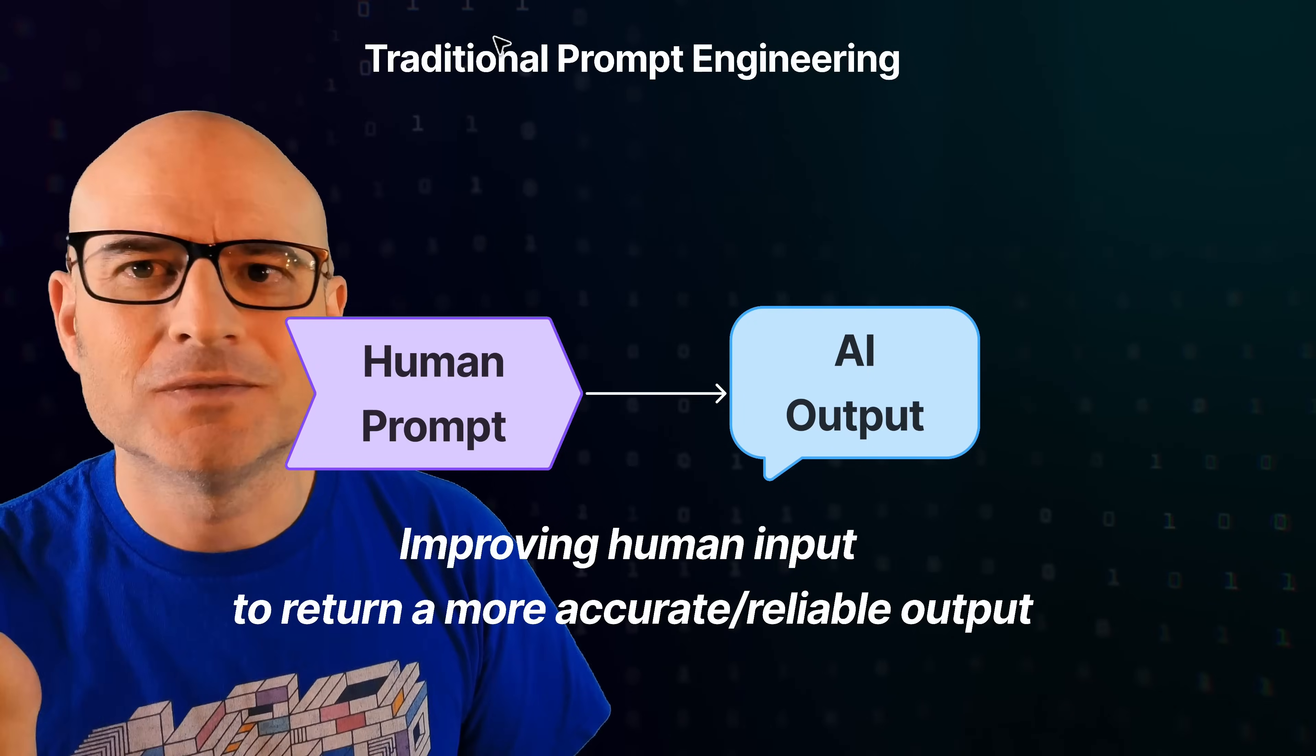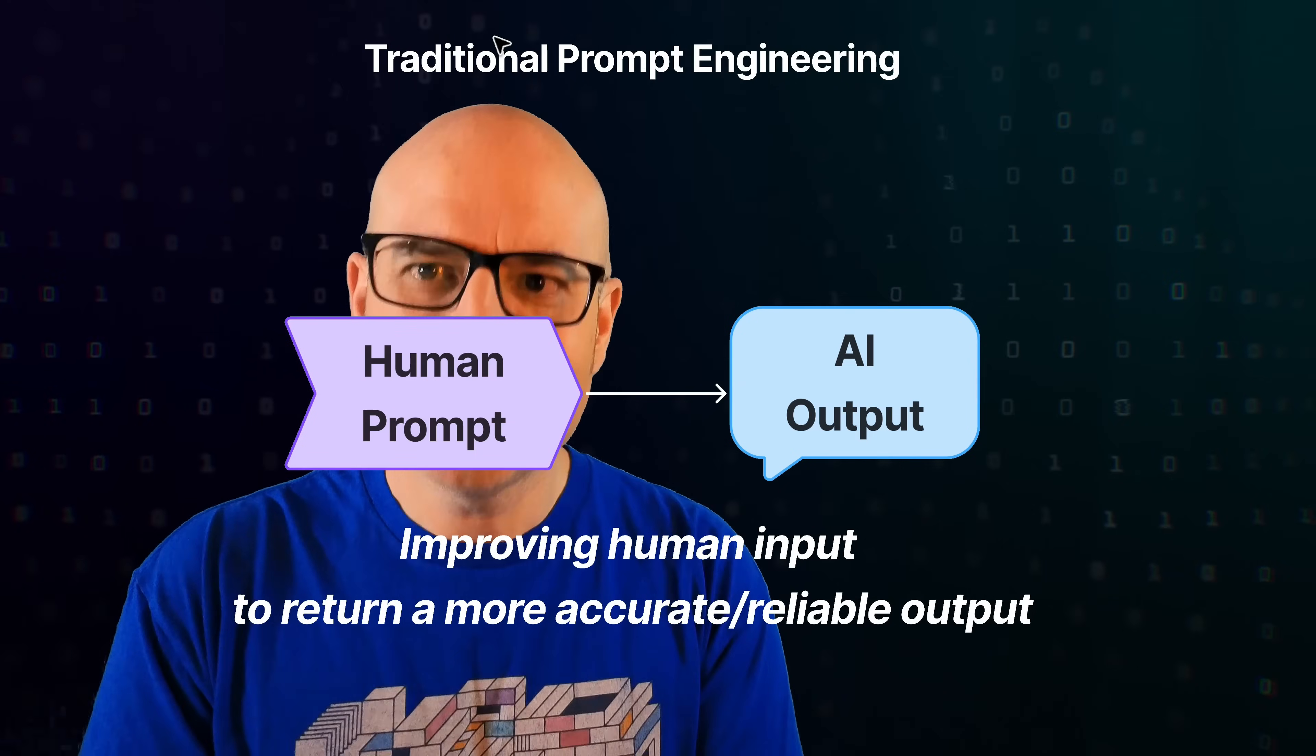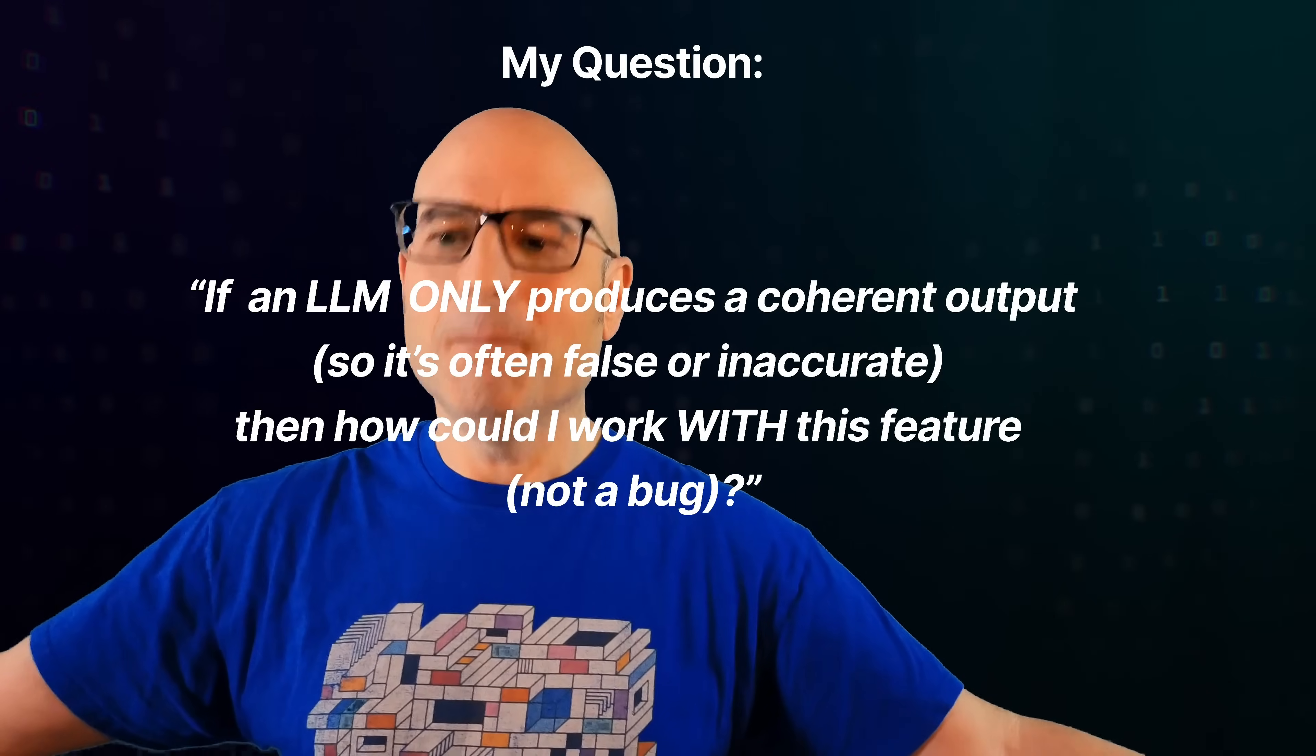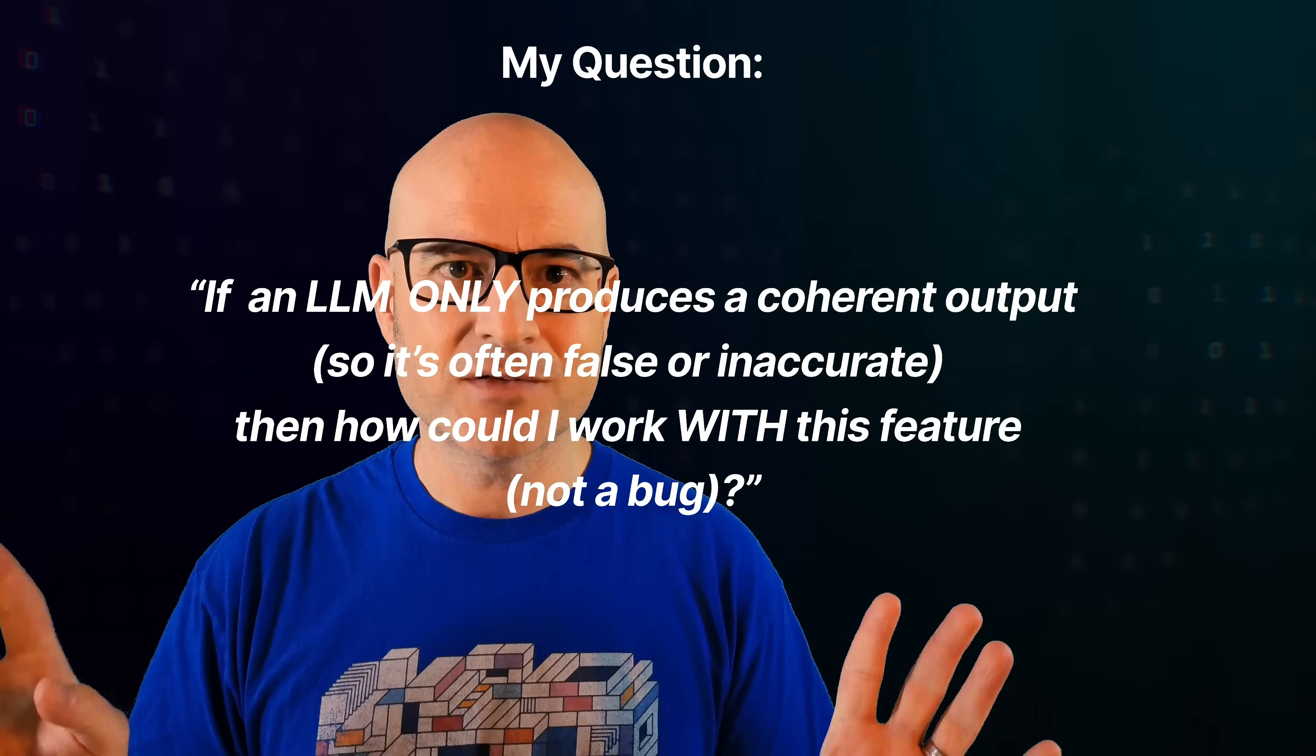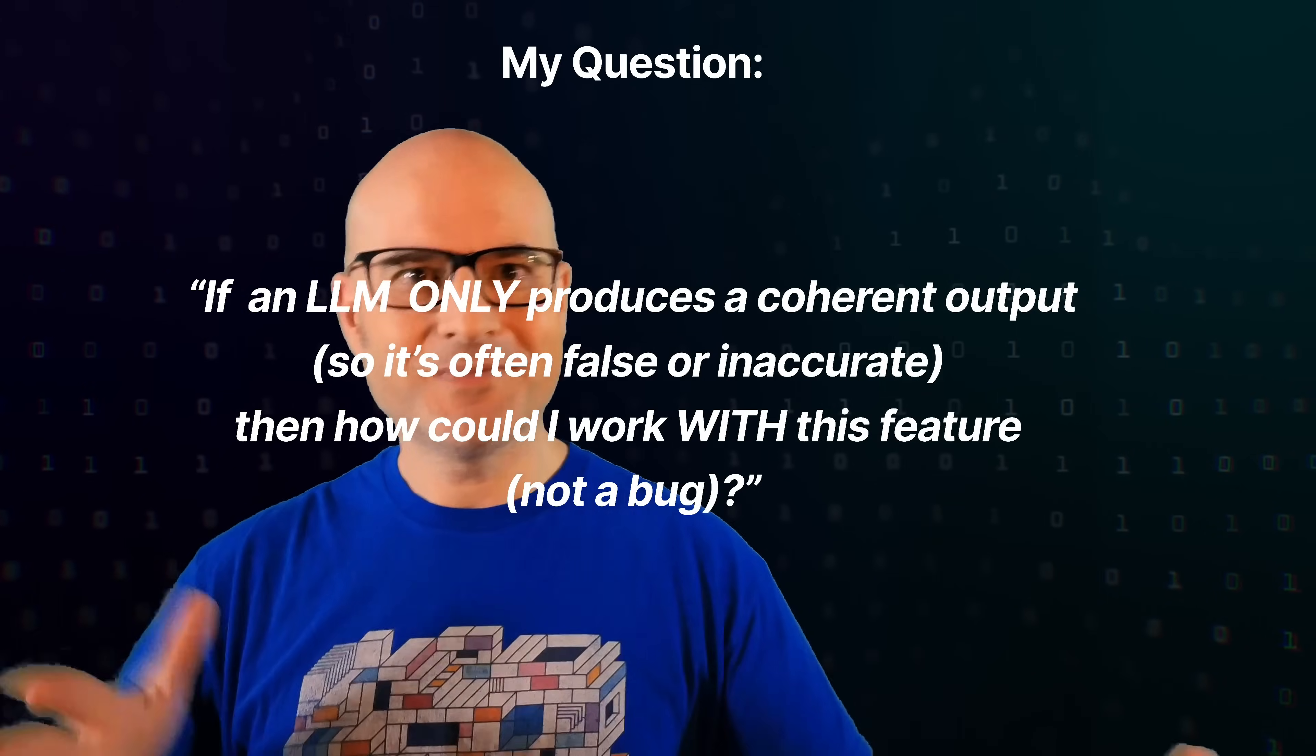Well, I'm not sure. I don't know. I'm not an expert, but I'm going, you know what, I'm not convinced that that's the only way. I'm not saying it's the wrong way, but it's the only way to work with these machines. So my question when I came into this was, let me just assume that an LLM is never going to be 100% accurate, because it only produces a coherent output. So it's often false or inaccurate, not always, but often. If I assume that, then how could I work with this feature and not treat it as a bug to be removed? It's a very different question you're asking yourself.